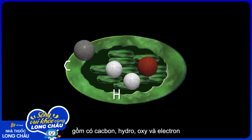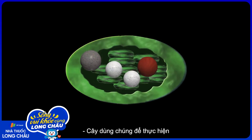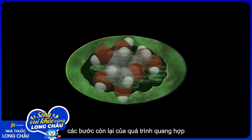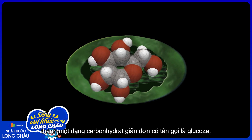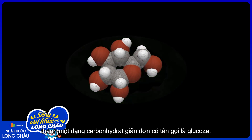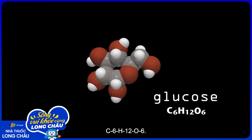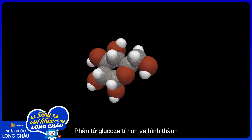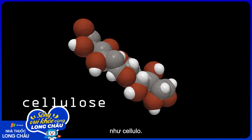So now that the chloroplast has all the building blocks — carbon, hydrogen, oxygen, and electrons — it can use them to go through the rest of the steps of photosynthesis to transform that original carbon dioxide gas into a simple carbohydrate called glucose, C6H12O6. That little glucose molecule then helps to build bigger and better carbohydrates like cellulose.